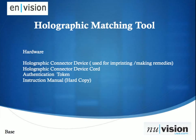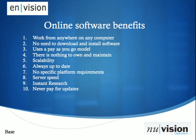With the hardware, what it comes with is the holographic connector device, which is used for imprinting or making remedies, a holographic connector device cord, and an authentication token. It is very secure — you do have to have a token to access the system. Also included is the instruction manual, which is also available online and is about a 200-page document, so there's a lot of information available to you.